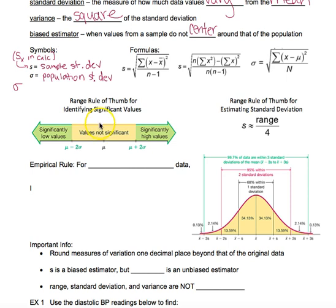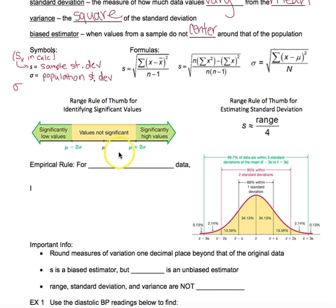Throughout this course we will learn three different ways to identify significant values, so it's important that you know which is which. The range rule of thumb identifies significant values based on the population mean and standard deviation. Values that are not significant — meaning not unusual — are those within two standard deviations of the mean.